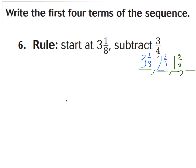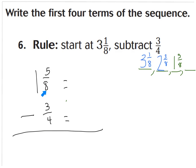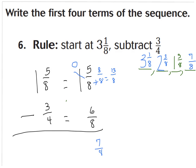Let's do our last term in the sequence — subtract 3 fourths from 1 and 5 eighths. My denominators aren't the same, but multiples of 4 are 4, 8, so I'll leave that as 8. 1 and 5 eighths stays the same, and 3 fourths equals 6 eighths. I can't take away 6 eighths from 5 eighths without regrouping. I'll take away a whole and add 8 eighths to my 5 eighths, giving 13 eighths. 13 eighths minus 6 eighths equals 7 eighths, and that's already simplified. So my last term is 7 eighths.